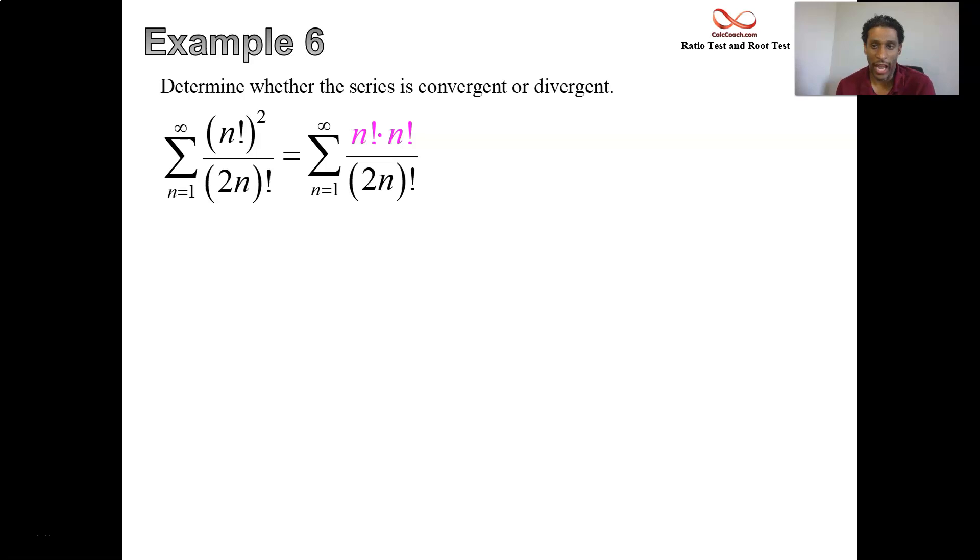In the ratio test your job is to divide a sub n plus 1 by a sub n and take the absolute value. What you're looking at is the ratio of successive terms, one term divided by the previous term. It looks a mess if you try to write it out, absolutely a mess.